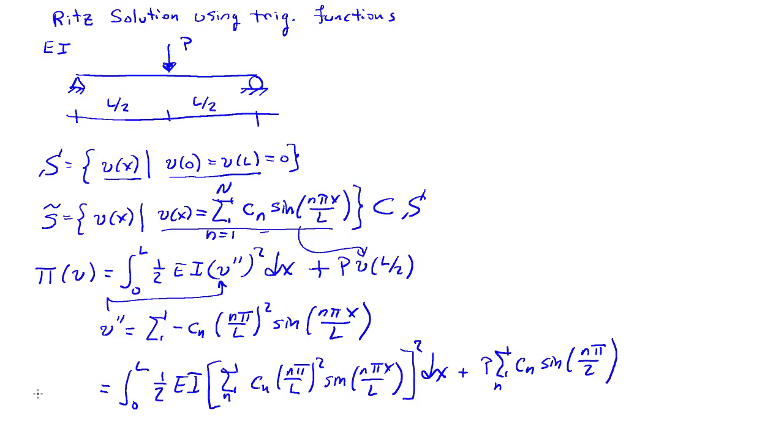so this is a sum over n, squared dx, and I drop the minus sign because I have this square up here, plus P times the sum Cn, so again a sum over n, of sine n pi over 2. So there's my potential energy, and it is now a function of the C's, C1, C2, all the way out to Cn. So for stationarity, the derivative of pi with respect to each Cn equals 0, so let's write dpi dCl, where L is just some generic C,